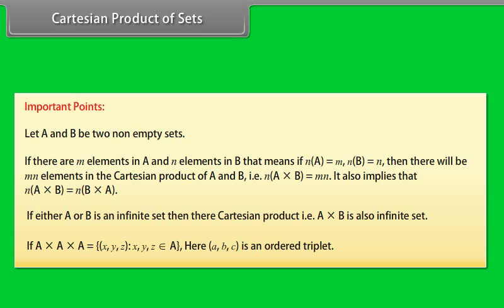If either A or B is an infinite set, then their Cartesian product A × B is also an infinite set. If A × A × A = {(x, y, z)} such that x, y, z belong to A, then (A, B, C) is called an ordered triplet.